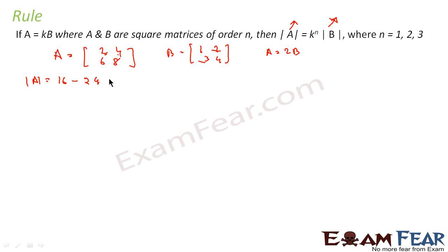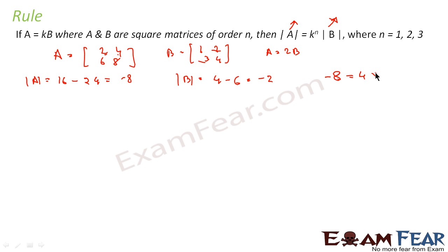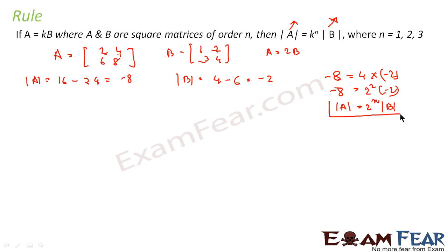That gives minus 8. Similarly, the determinant of B is multiply diagonal elements: 4 into 1 minus 3 into 2, which is 6 — so minus 2. You can see that determinant of A, which is minus 8, is nothing but 4 into minus 2, and that is 2 to the power 2 into minus 2. Here n is 2 and minus 2 is the determinant of B.